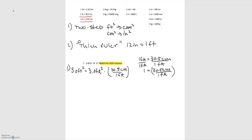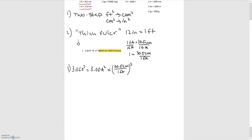We want to get rid of feet squared, so we need to square this whole term. That completes the first step. Now we want to convert centimeters squared into inches squared, so we move to the second step using the conversion 2.54 centimeters equals one inch.